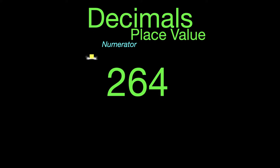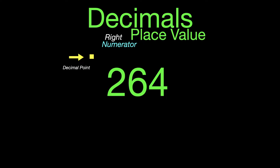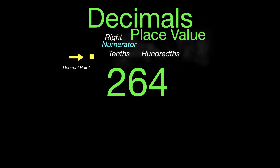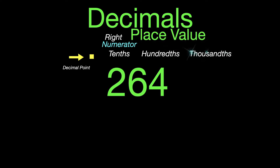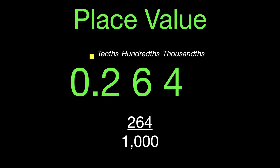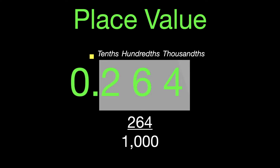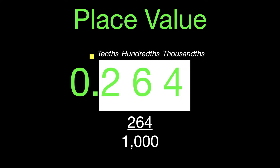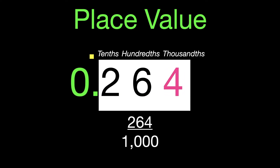Remember, those are decimal place values. We have our decimal point, and everything to the right of that decimal point would be tenths, hundredths, and thousandths — our focus is mostly thousandths today. We would read that number as 264 thousandths. All three of those numbers we just read as one number on that side — 264 — and we say thousandths because the four is in the thousandths place value.